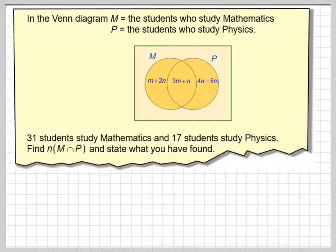OK, here we have an interesting Venn diagram question. So it says in the Venn diagram, M equals the students who study mathematics. P is students who study physics.